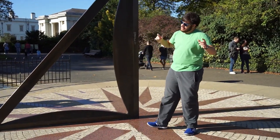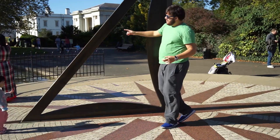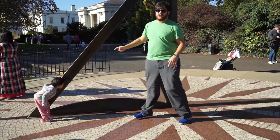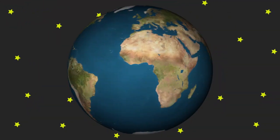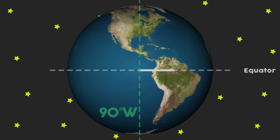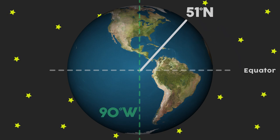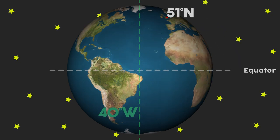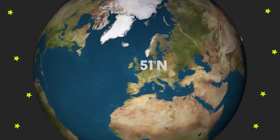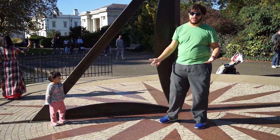I said no. With a sundial, the angle of this away from the horizontal is equal to the number of degrees of latitude above the equator that you are. So in the UK, in London, we're 51 degrees north, which means that the angle between this and the horizontal is 51 degrees.